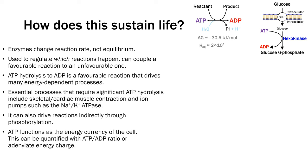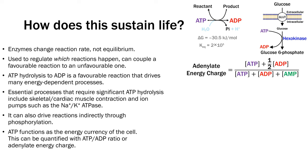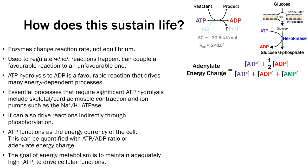ATP functions as the energy currency of the cell. This can be quantified with the ATP/ADP ratio or adenylate energy charge. Adenylate energy charge, or AEC, is defined as ATP concentration plus half the ADP concentration, divided by the total concentrations of ATP, ADP, and AMP. ADP is included in the numerator because it has some potential to drive reactions, but not as much as ATP. The goal of energy metabolism is to maintain an adequately high ATP concentration to drive cellular functions.